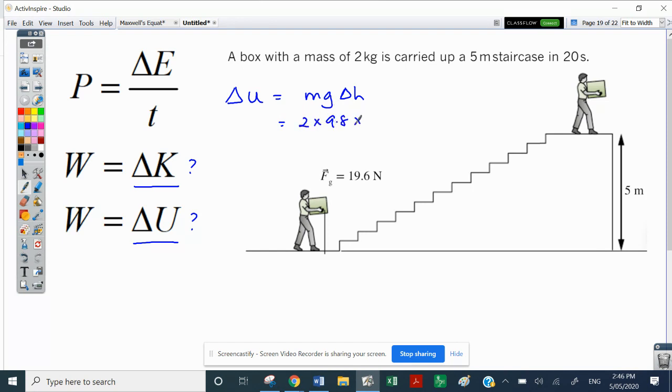times by the change in height, which is five. So that will be 98 joules. So there's a change of 98 joules. In this case, we are going to gain gravitational potential energy. So it's a positive 98 because it was a positive five there.